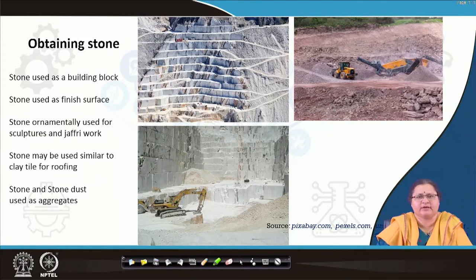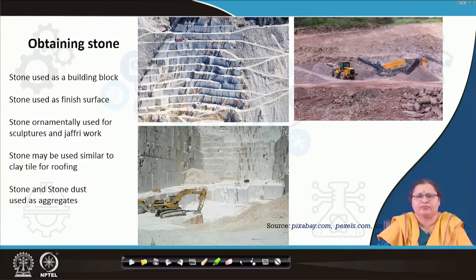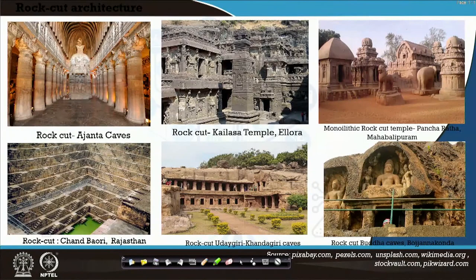Stones can be used as a building block itself, as a finish on top of a surface, or ornamentally — like making sculptures and jali works. Stone may also be used similar to clay tile for roofing purposes, as well as for aggregates in concrete mixes. Similar to how fourth-class burnt brick went back to the foundation, debris from the stone quarry can be selected and used as aggregates in concrete.